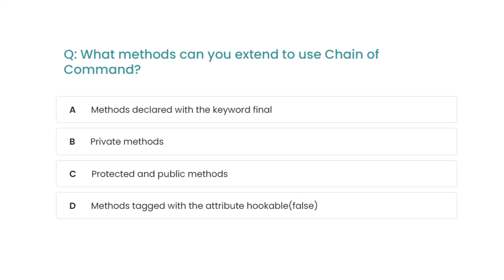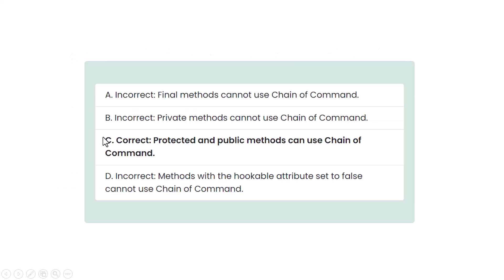The correct answer is option C — protected and public methods. Only for protected and public methods can you use Chain of Command. Option A is incorrect because final methods cannot use CoC. Option B is also incorrect because private methods cannot use CoC. Option D is incorrect because methods with the Hookable attribute set to false cannot be used in Chain of Command.